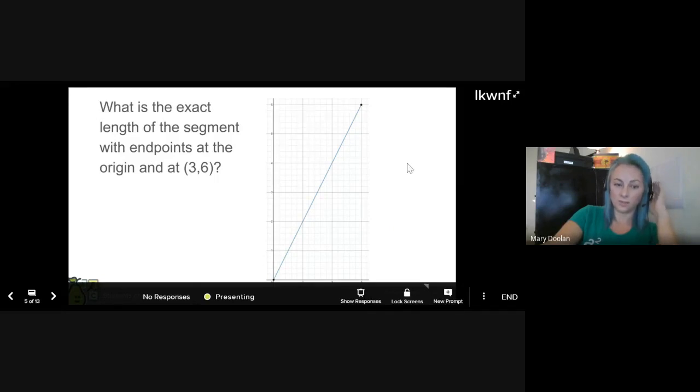So now let's try to put this to work. We're thinking about these three things that do go together. And this is what you want to use to basically figure out what is the exact length of the segment with endpoints at the origin and at three comma six. There's lots of ways to do this. So do it however you would like. You're going to put your answer on the Pear Deck slide. It's a multiple choice question.